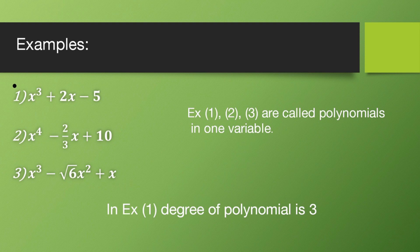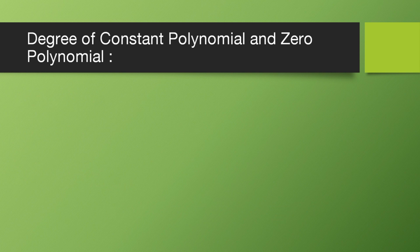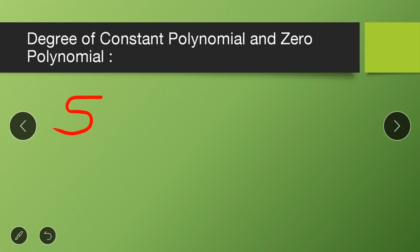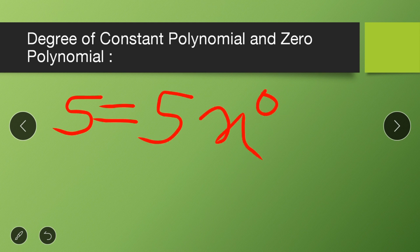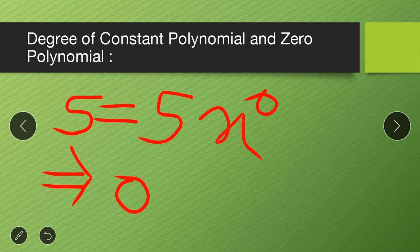What is the degree of a constant polynomial? Take the constant 5: you can write it as 5·x⁰, so the highest power of x is 0. Therefore, the degree of a constant polynomial is 0. This applies to any constant number — any constant polynomial has degree 0.